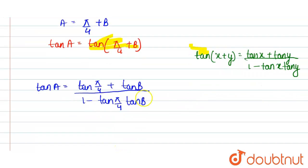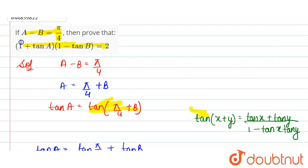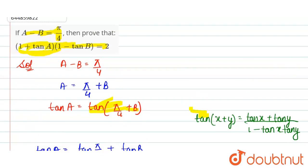So tan 45° is 1. So here tan π by 4 is nothing but tan 45°, so tan 45° is 1. So 1 plus tan B divided by 1 minus tan B. So this is the value of tan A.